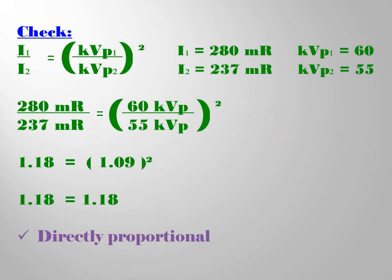Let's check. Therefore, the final intensity is 237 mR for the 55 KVP. You can see that the initial intensity is 280 mR.